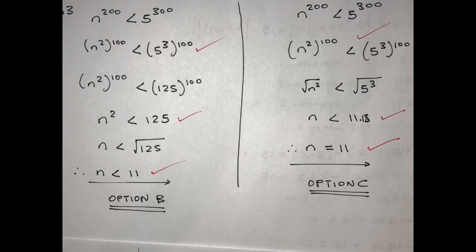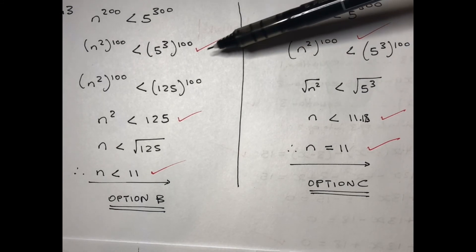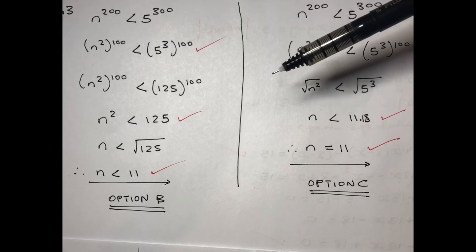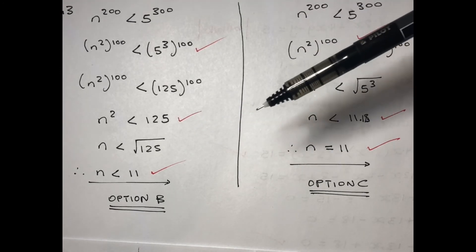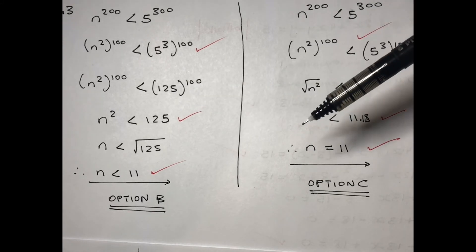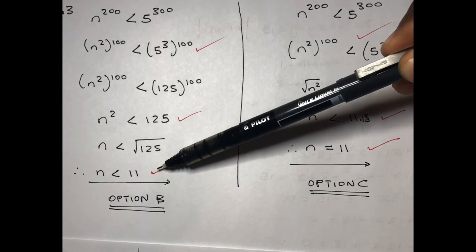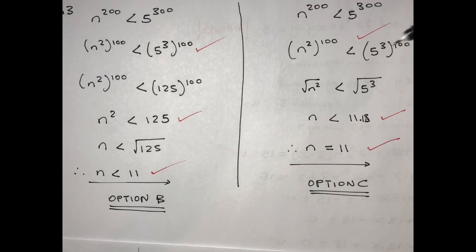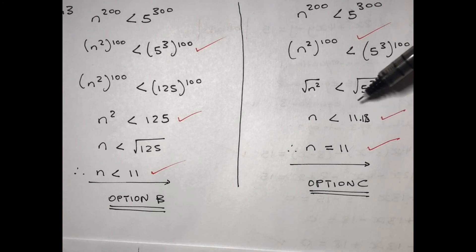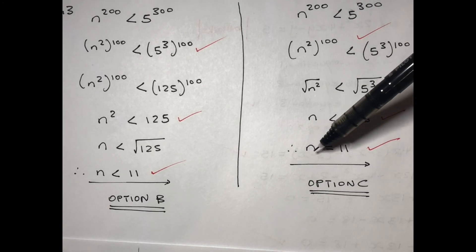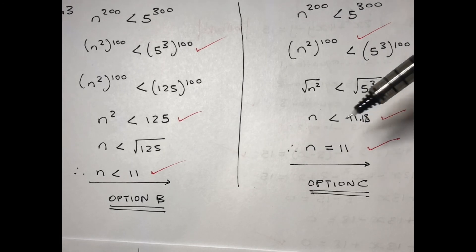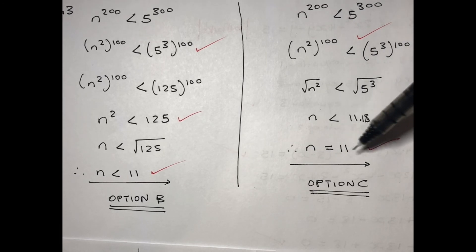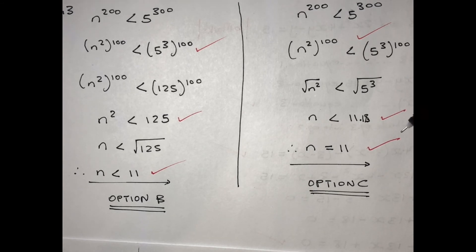Notice where you score marks: you score a mark for simplification, a mark for punching in that value, and a mark for the final answer. The same applies to the other options — a mark for simplification, a mark for the calculation, and the last mark for indicating that n equals 11.